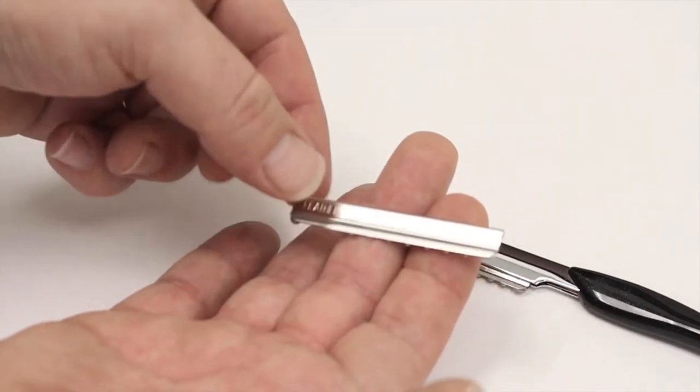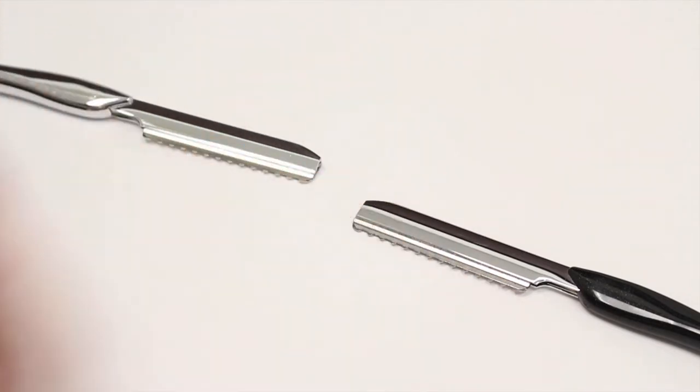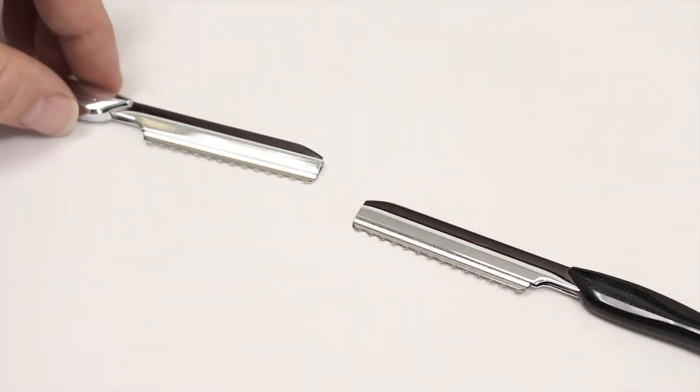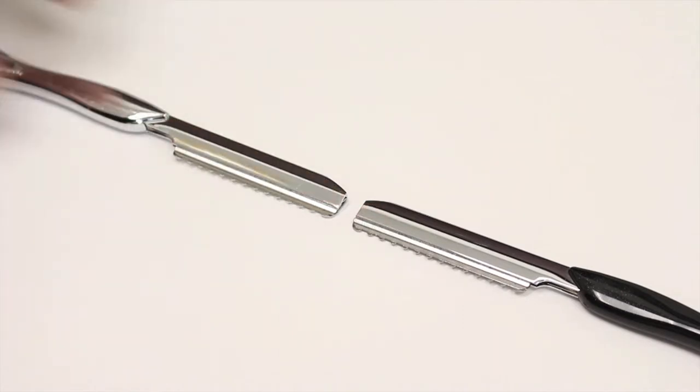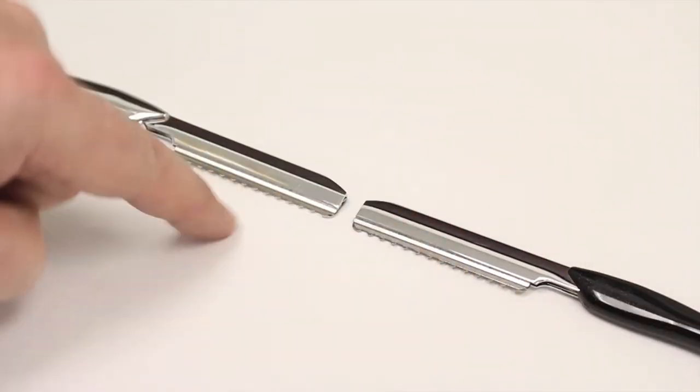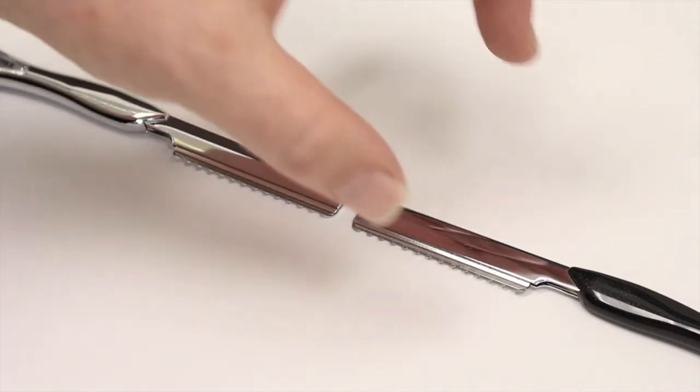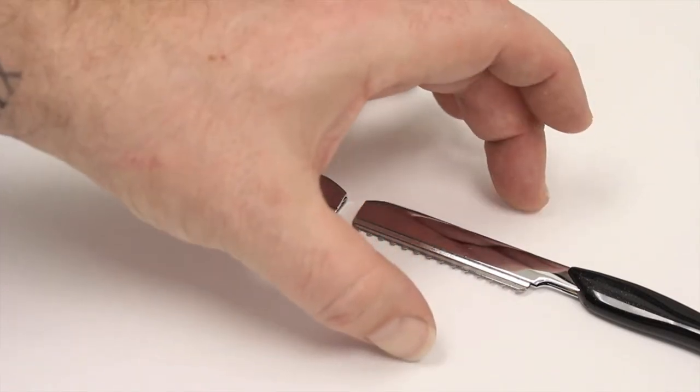So if we just move over now to looking at the two razors. Again, identical razors, one is on this way and one is this way, showing you a left-handed razor and a right-handed person using the razor.